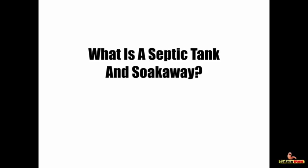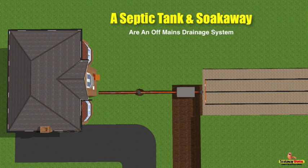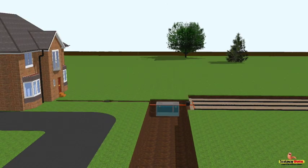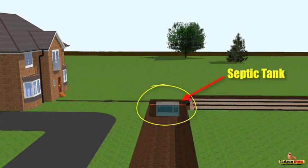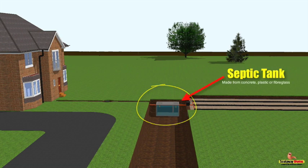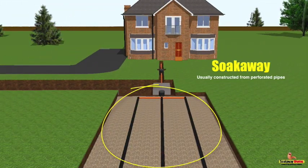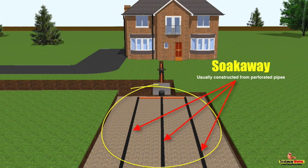So what is a septic tank and soak away? A septic tank and soak away are for properties not connected to mains drainage. A septic tank can be made from concrete, plastic or fibreglass. Soak aways are generally constructed from perforated pipe, gravel or soak away crates.